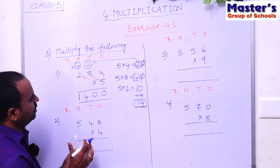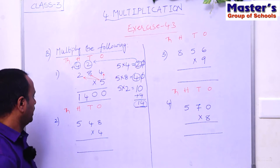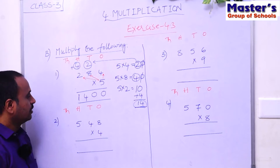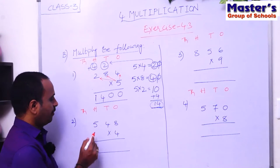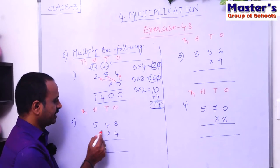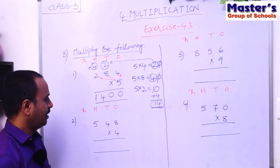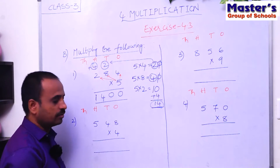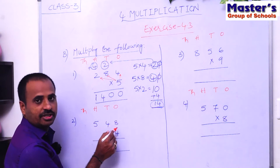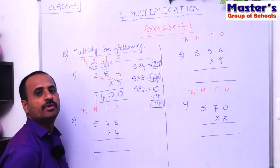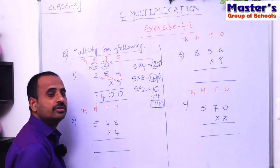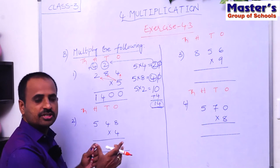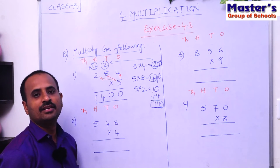Children, this is the multiplication. Now see the second problem. The given number is 548, a three-digit number. The single-digit number is 4. You should know the fourth table thoroughly to do this multiplication easily.